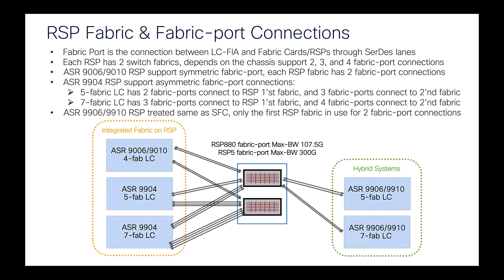Let's talk about the RSP fabric and fabric port connections. In the integrated chassis, the RSP plays a different role because it has two fabric switches inside. Each fabric, depending on the chassis, can support two, three, or four fabric port connections. The fabric port connects the line card's fabric interface ASIC — called the FIA — to the SFC or RSP through SERDES (serialization/deserialization) channels. In the ASR9006 and 9010, it supports symmetric fabric ports, meaning each RSP fabric supports two fabric port connections.